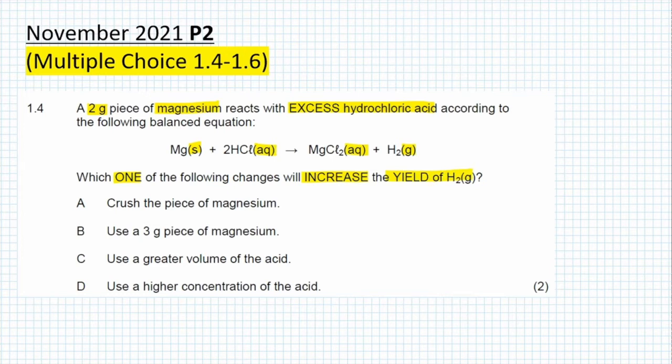Before we read through the options, there are some important details. Number 1, they specify how much magnesium will be reacting. Number 2, they say that the hydrochloric acid is in excess. This is not by chance.